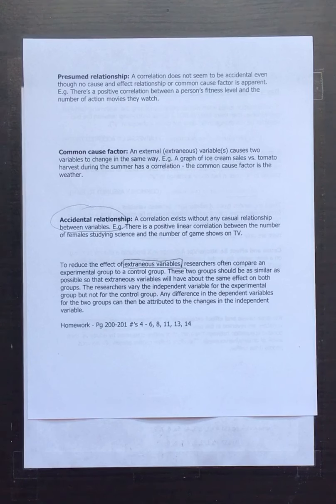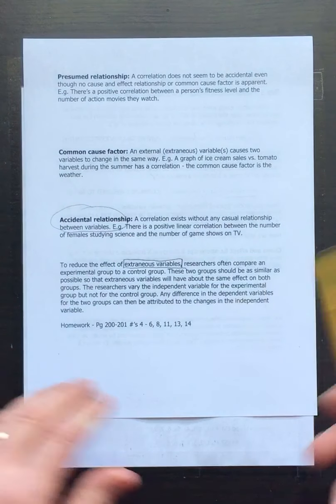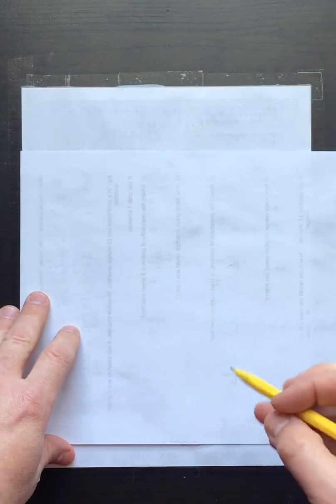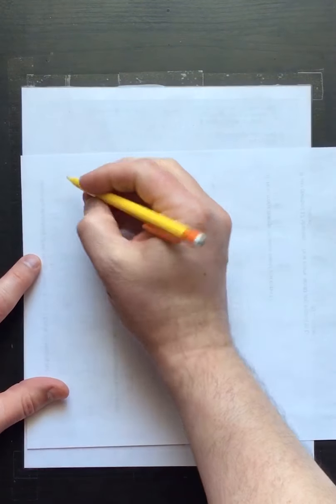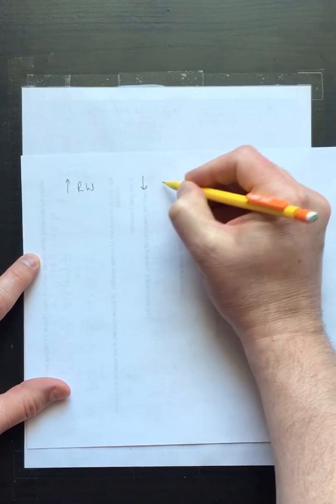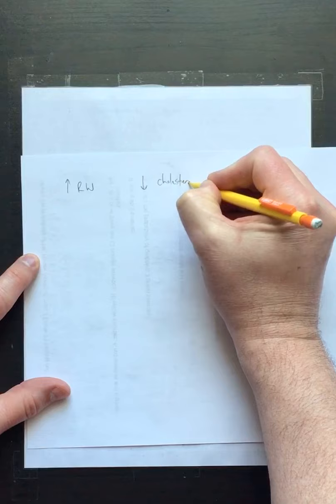Body type — whether you're a mesomorph, ectomorph, or endomorph — metabolism levels, and age can all play a role. You want to eliminate those variables one by one by designing an experiment. Very often, you design it with blind tests, placebos, and control groups. Let's look at an example: a study where we thought there was causality but it was actually a common cause. As red wine consumption increased, cholesterol was lowered.